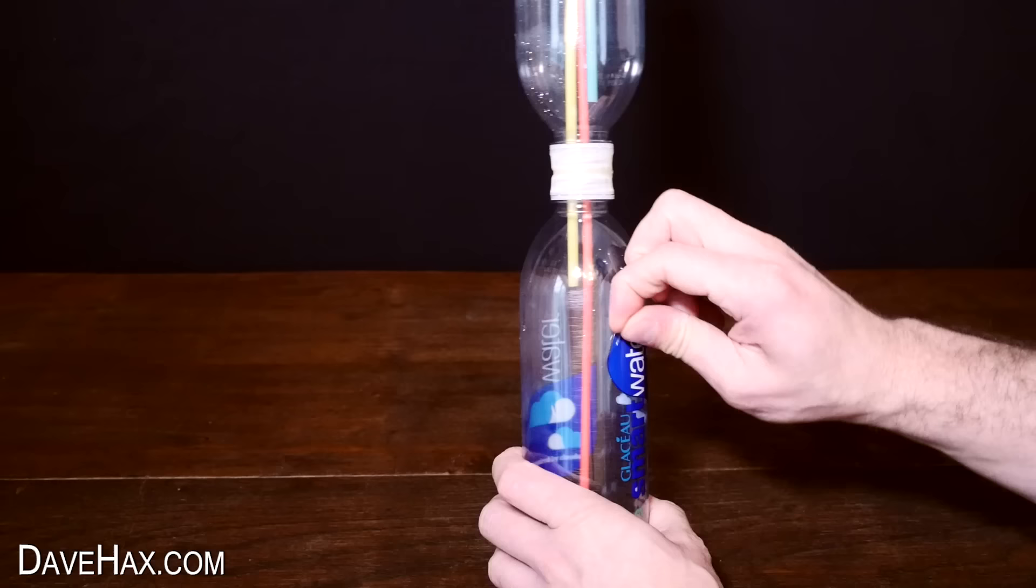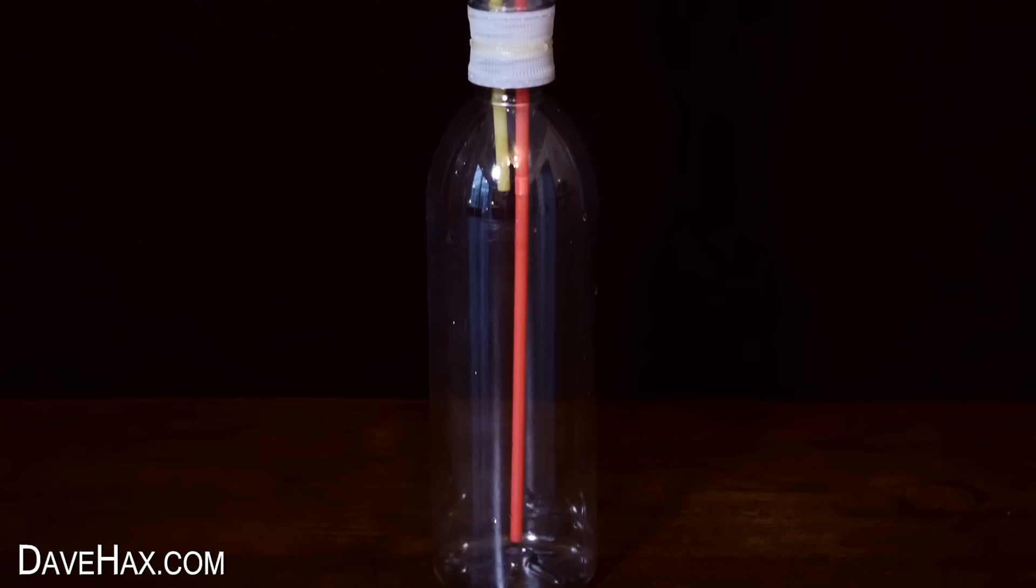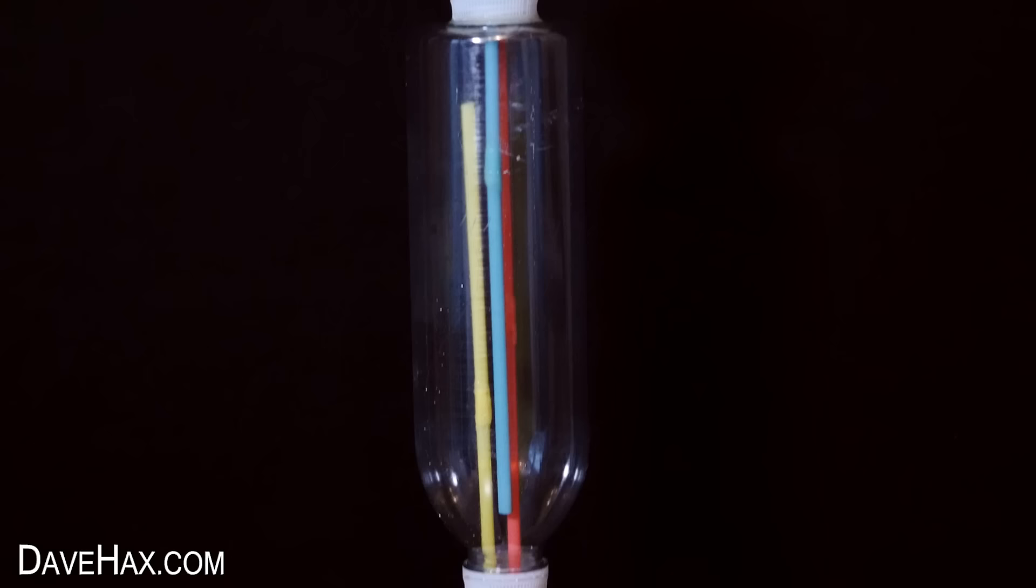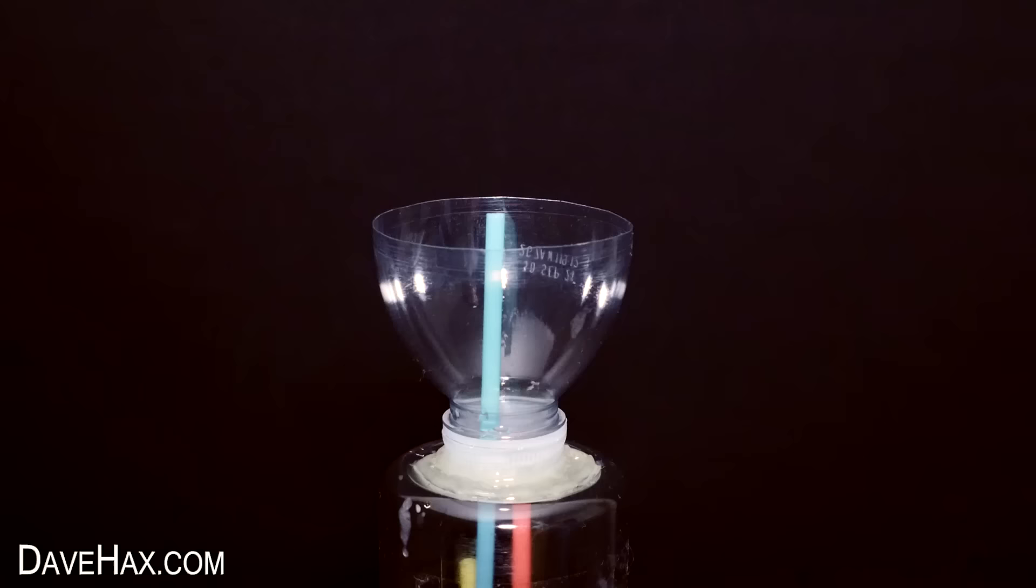Now that it's finished, I decided to remove the labels of the bottles so you can see inside better. And there it is. Using different colored straws really helps us to see exactly where they're positioned.